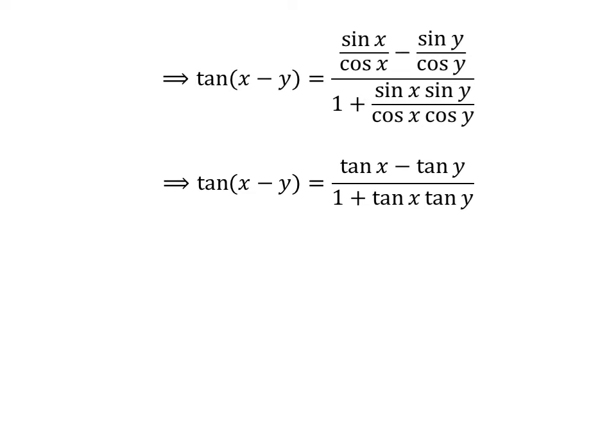We know sine of x upon cosine of x is equal to tangent of x, and sine of y upon cosine of y is equal to tangent of y. Thus, tangent of x minus y is equal to tangent of x minus tangent of y upon 1 plus tangent of x times tangent of y.